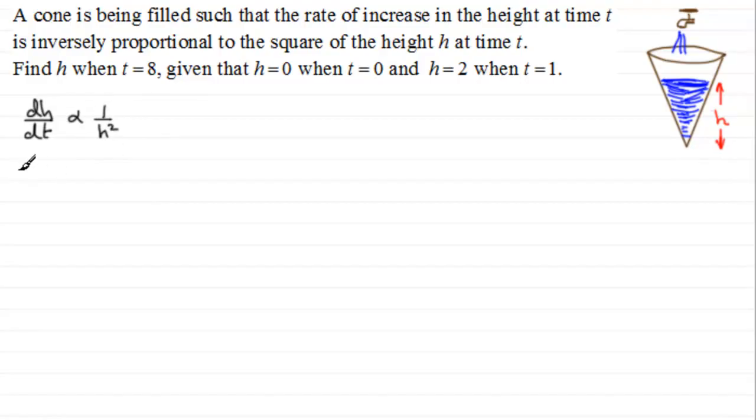We need to change this to an equation, so we introduce a constant and I'm going to call that constant k. So it'll be equal to k times 1 over h squared, or in other words k over h squared.